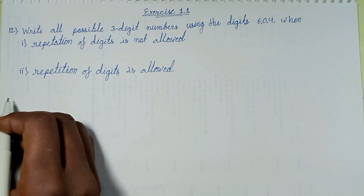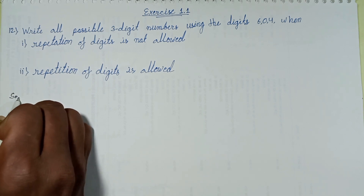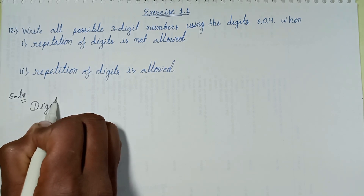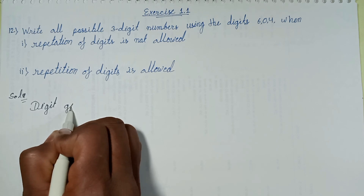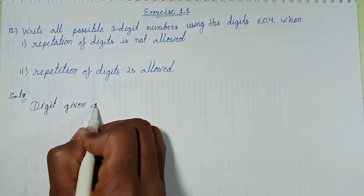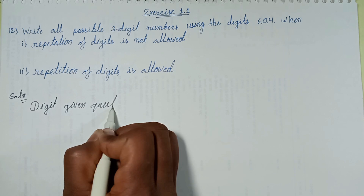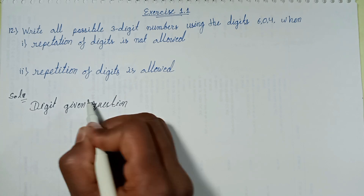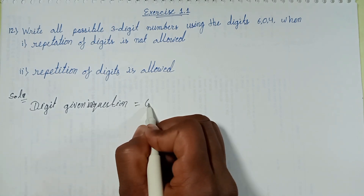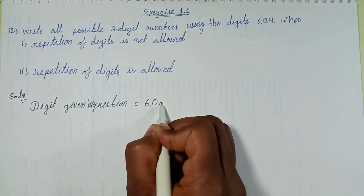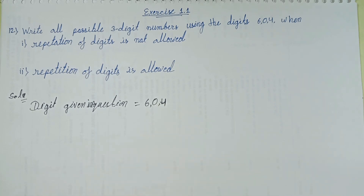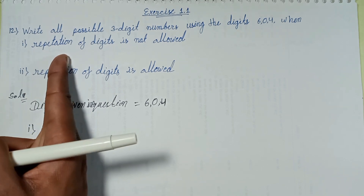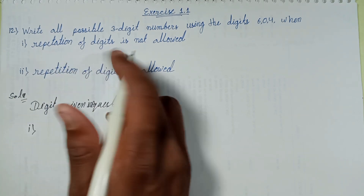First, the solution. The digits given in the question are 6, 0, and 4. First situation: repetition of digit is not allowed.